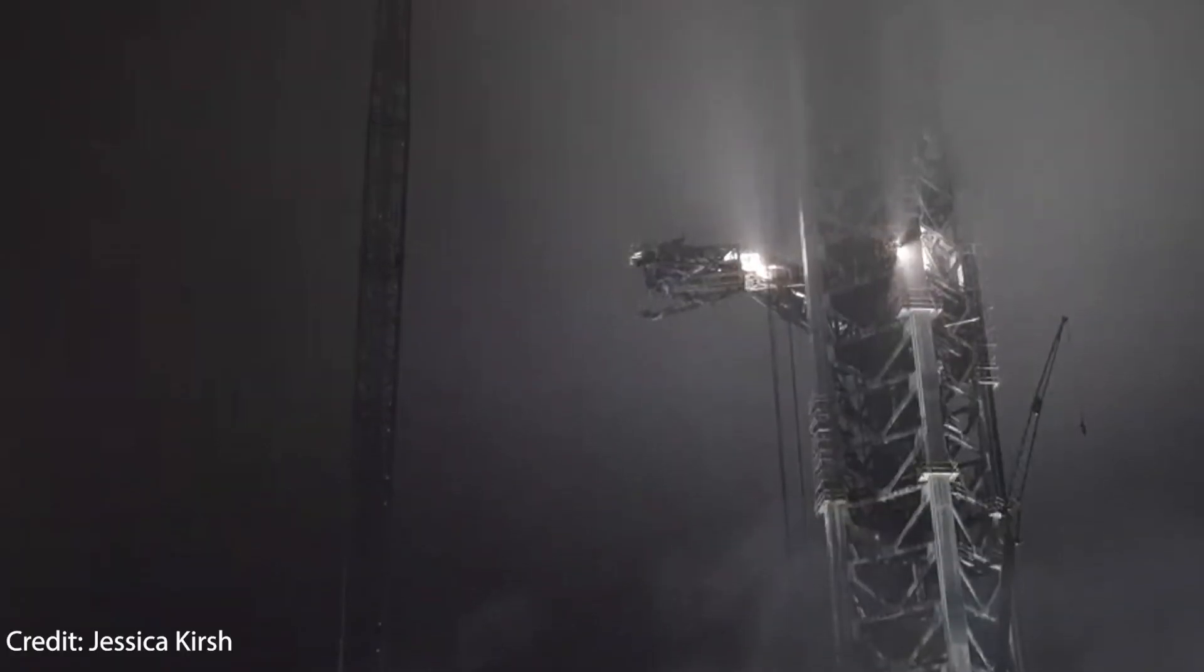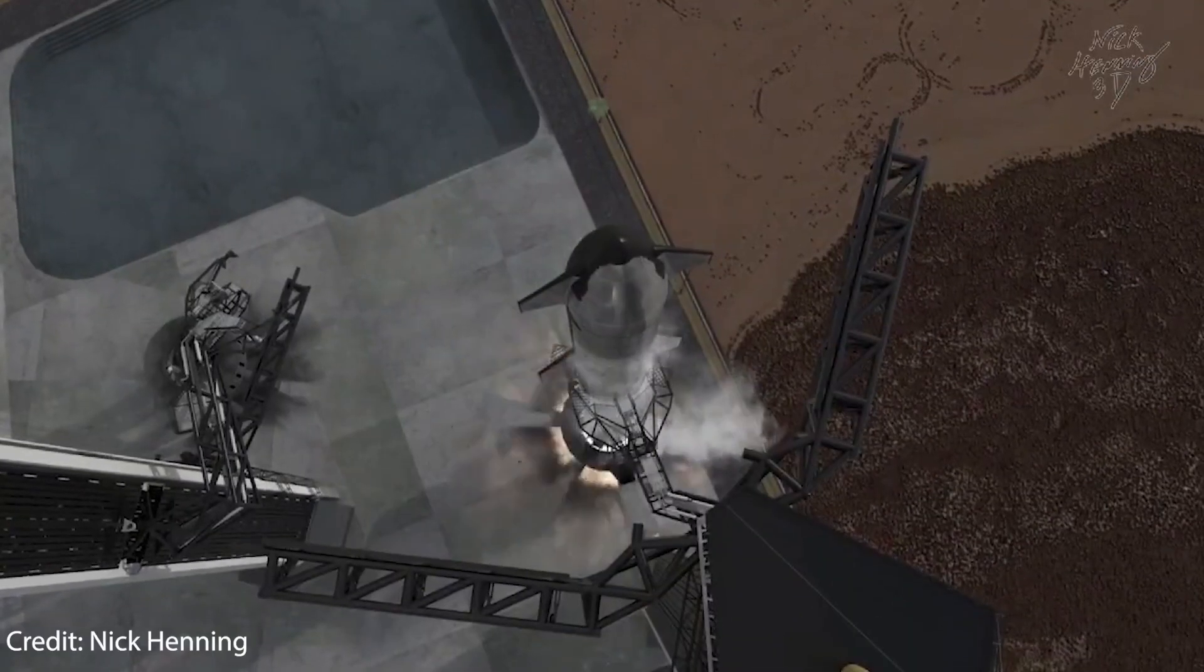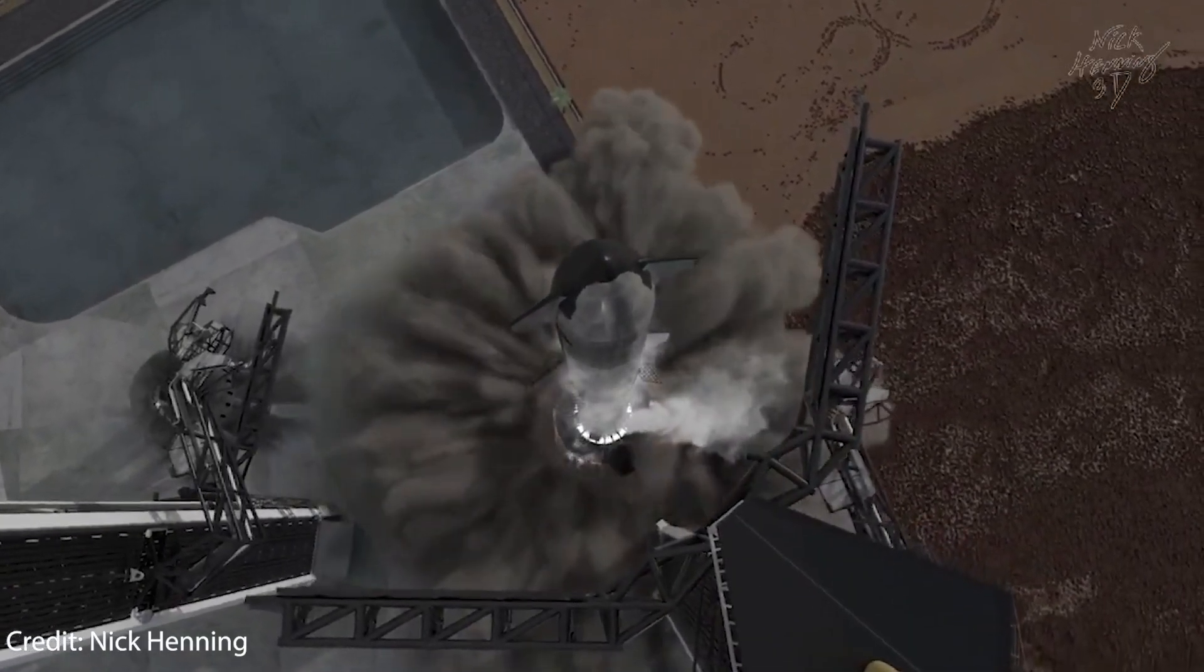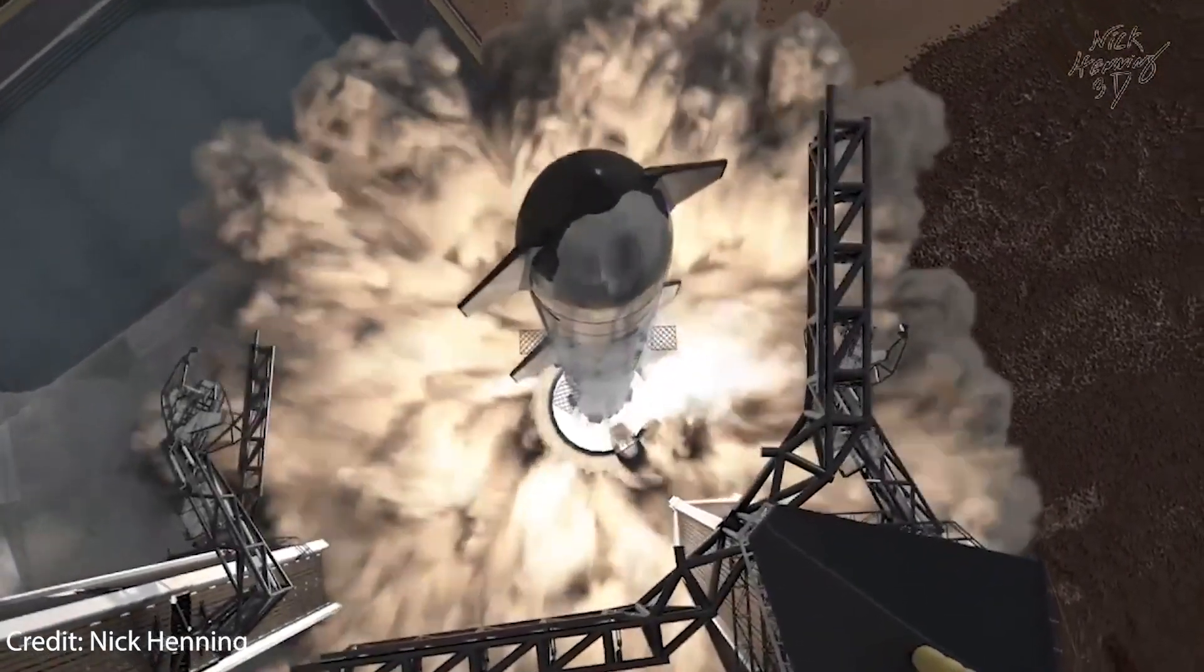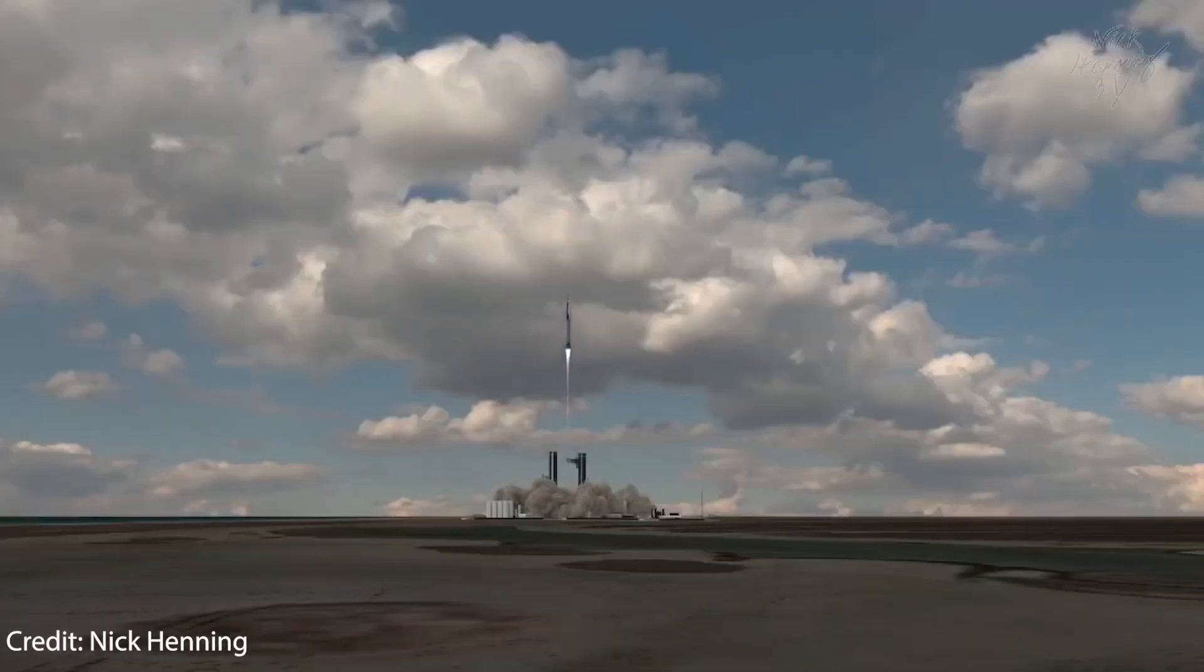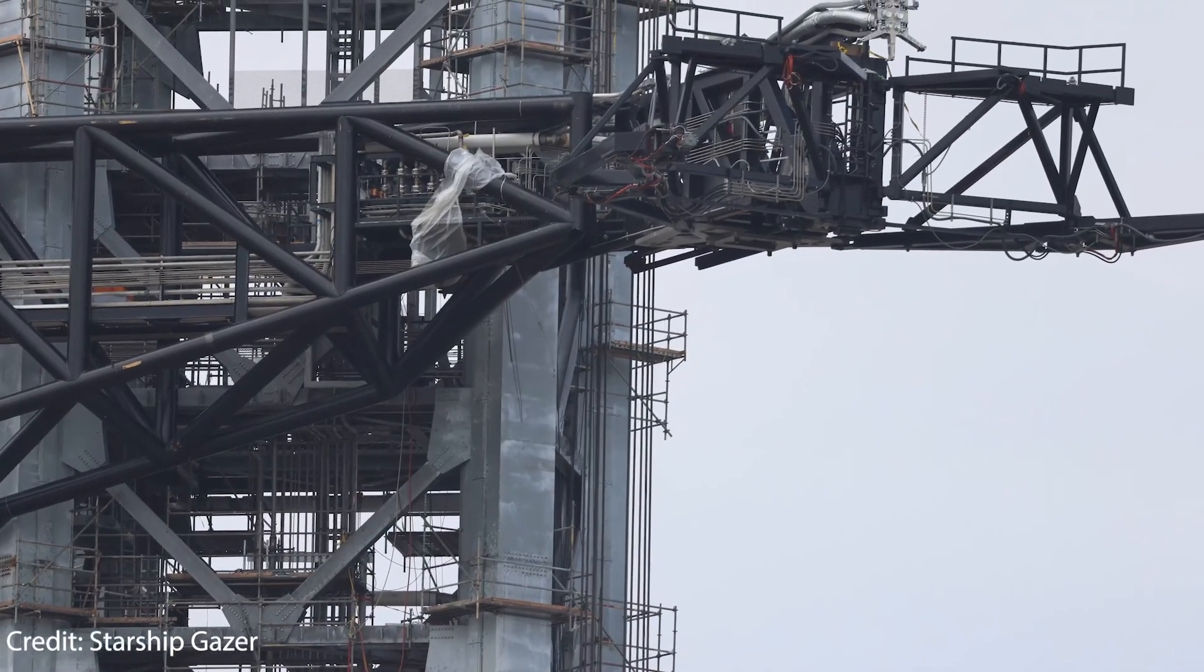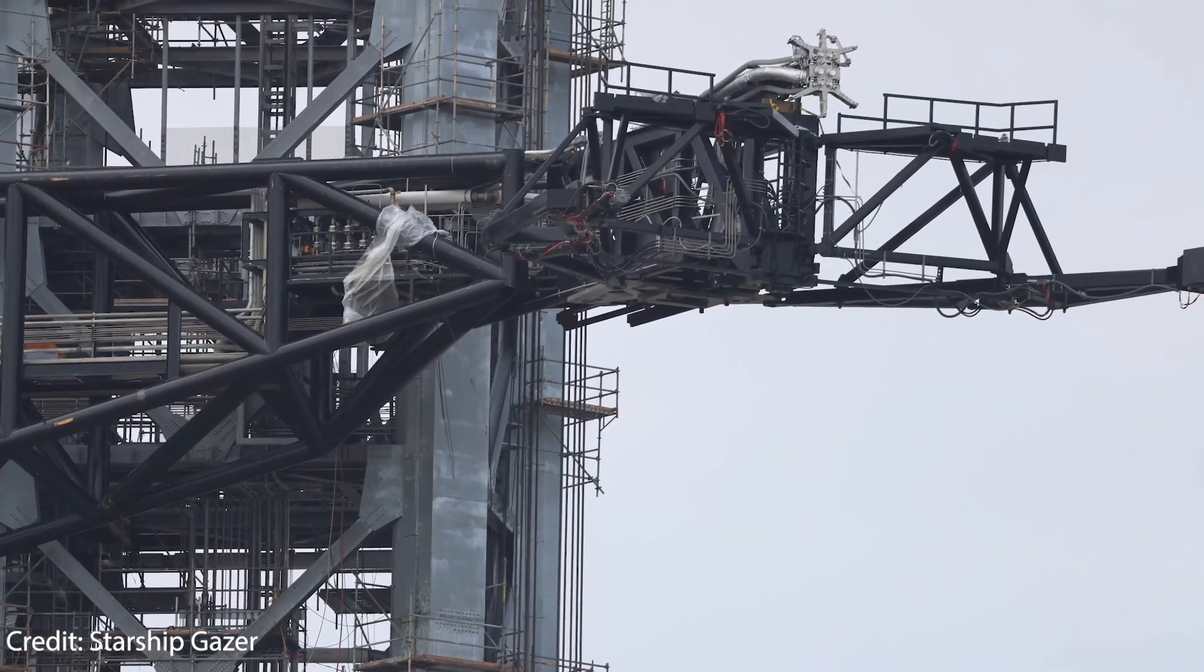The orbital integration tower is finally nearing completion and the first orbital test flight of Starship doesn't seem too far away either. Today I bring you a deep dive analysis of how one of the most critical components for the success of the Starship program at Starbase works. I'm talking about the quick disconnect arm, one of the main structures composing the orbital integration tower.